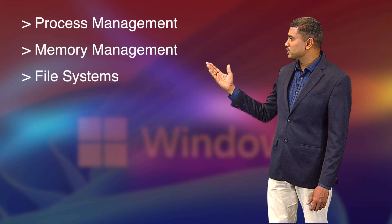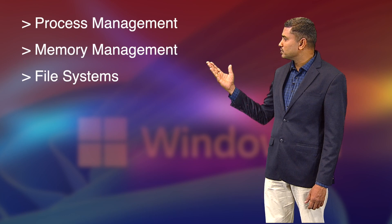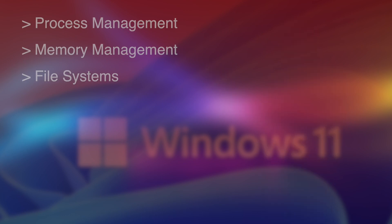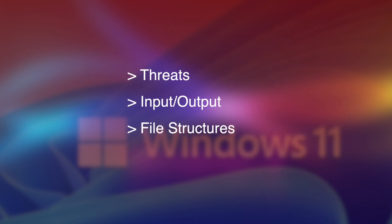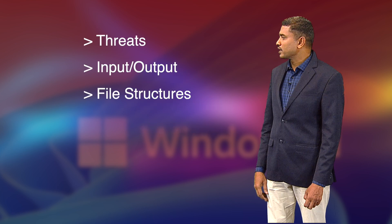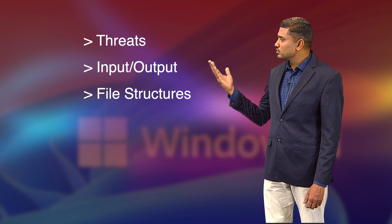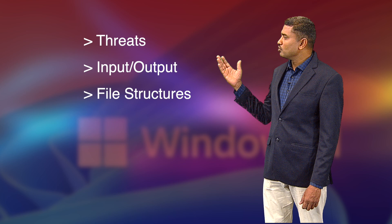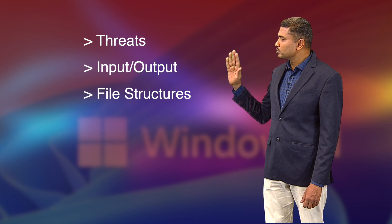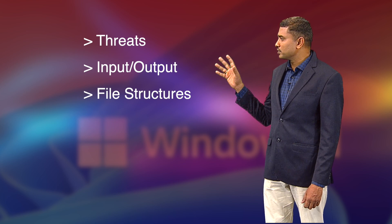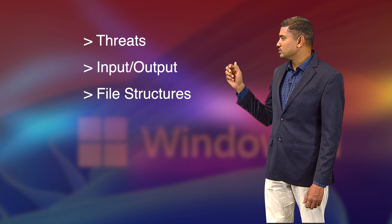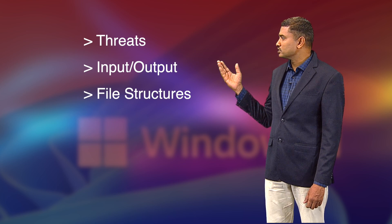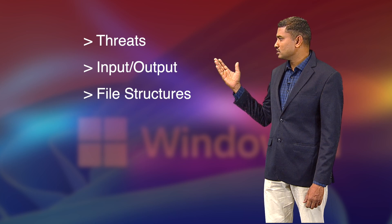The main functionalities covered include process management, memory management, file systems, threads, and how input and output is handled — along with the inner mechanisms that take user input, process it, and the optimizations happening inside the operating system in terms of memory and file structures.